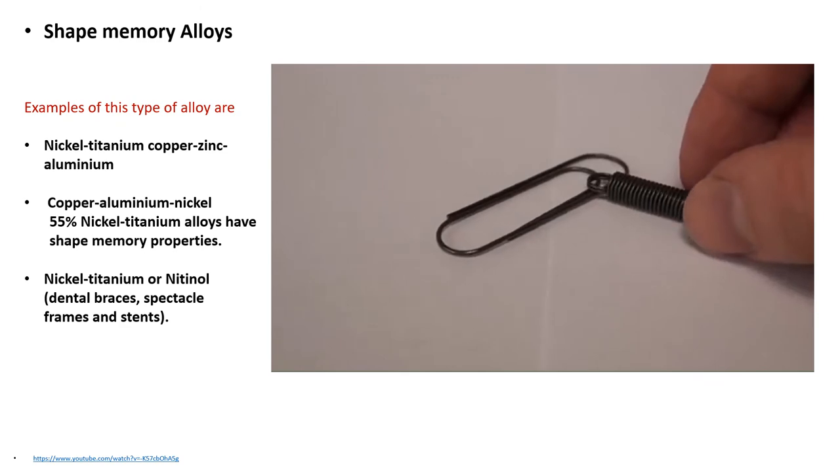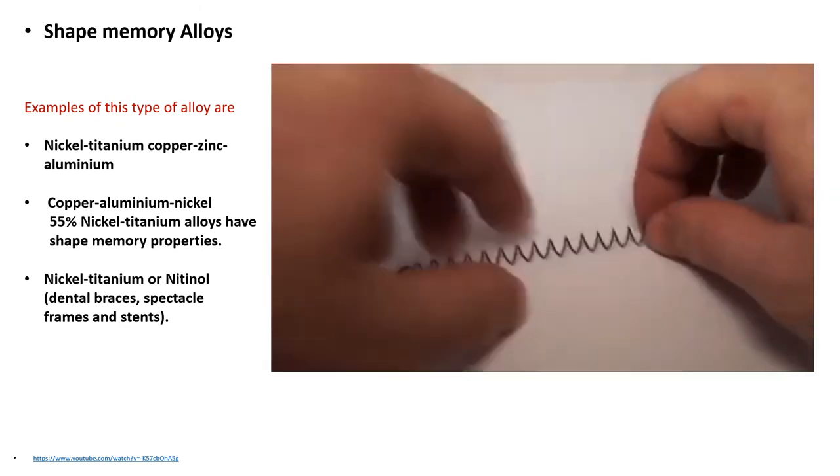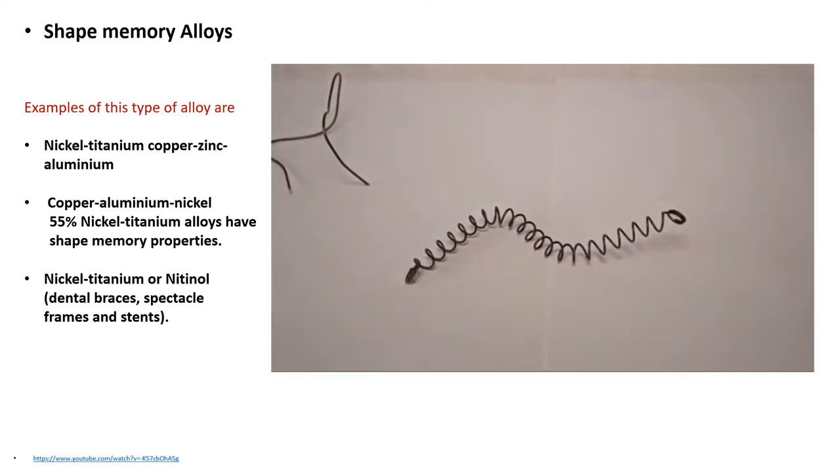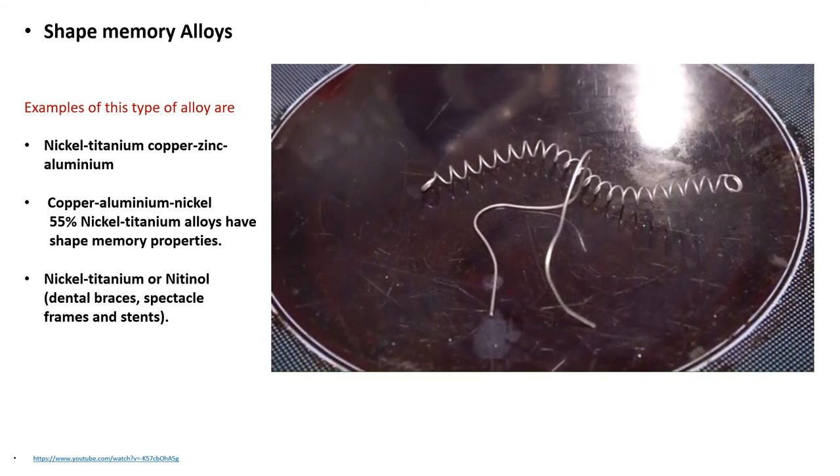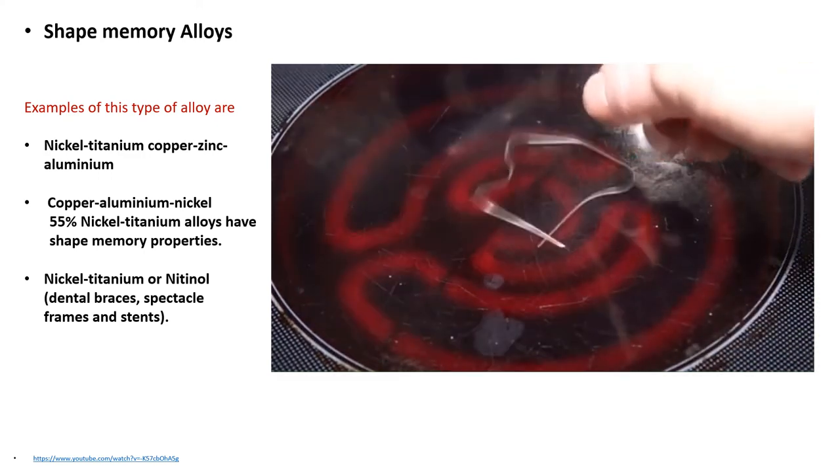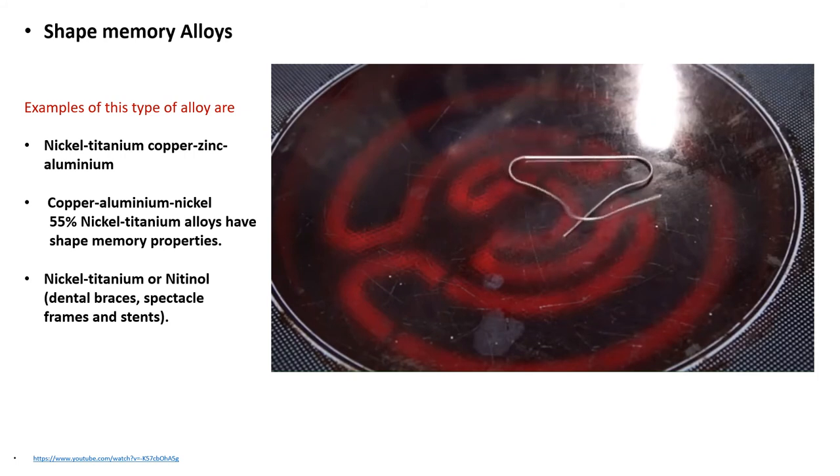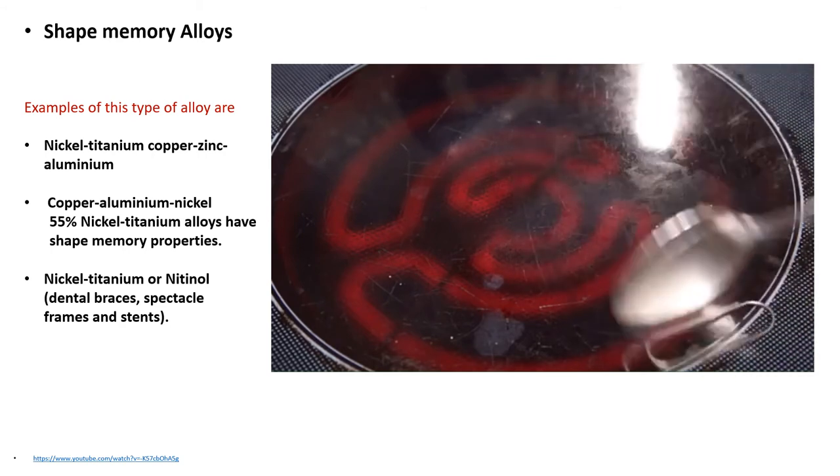Besides the clip, I also have a spring made of nitinol, which I also deform into a random shape. The activation temperature of nitinol is about 40 degrees Celsius. I have turned on the burner on the stove and put the deformed nitinol clip on its surface. Over time, while heated, the clip begins to return to its original shape. The same thing happens with the spring. This happens because when the temperature changes, the crystal lattice configuration of nitinol changes from one phase to another.